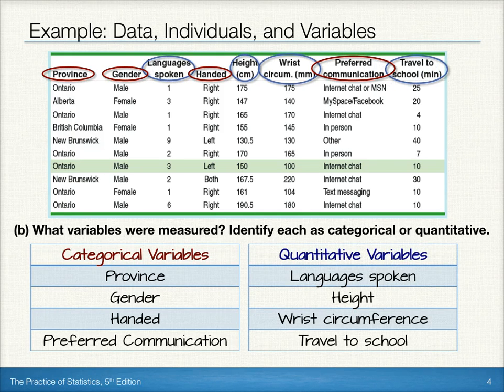The quantitative variables are the number of languages spoken, height, wrist circumference, and the time it takes to travel to school. Notice each of the quantitative variables are numeric, and it would make sense to calculate an average.